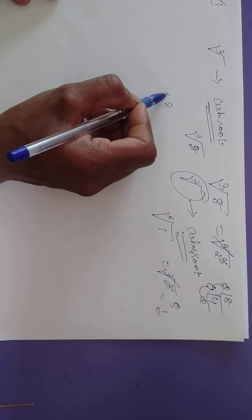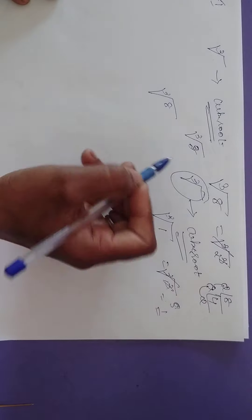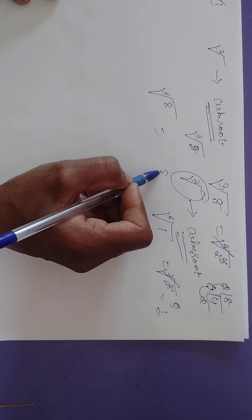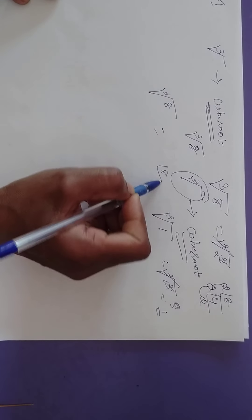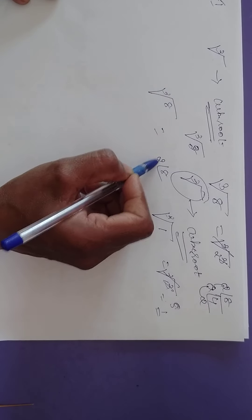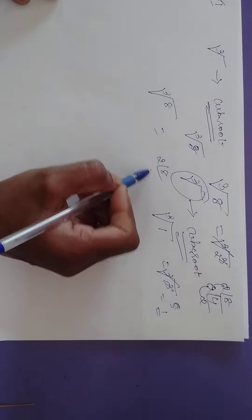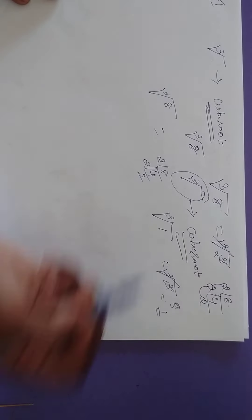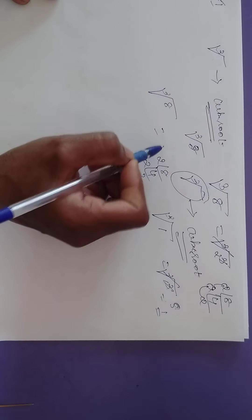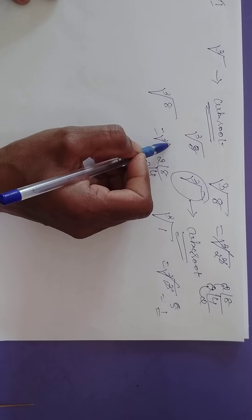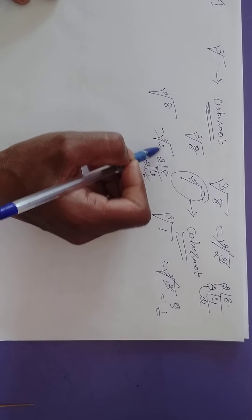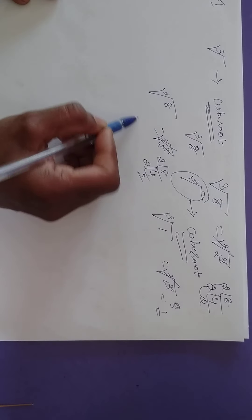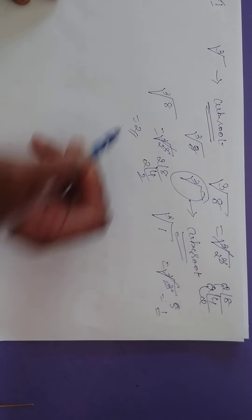For example, cube root of 8 — it is a perfect cube. 8 can be divided by 2: 2 times 4 is 8, 2 times 2 is 4. So we can write it as cube root of 2 cubed. Cube and cube root get cancelled — it is equal to 2.